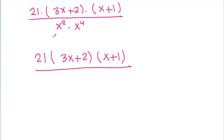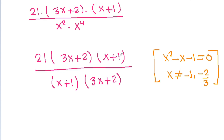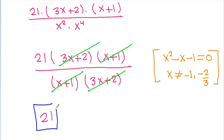Here x squared equals x plus 1 and x to the power 4 equals 3x plus 2. Since x squared minus x minus 1 equals 0, x is not equal to minus 1 or minus 2 over 3, so we can cancel x plus 1 with x plus 1 and 3x plus 2 with 3x plus 2. We get 21, which is the required answer.